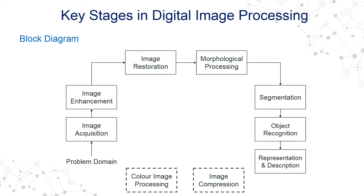For image compression, to reduce the requirement of large amounts of memory needed to store an image on a disk, or the bandwidth to transmit it, we try to compress the image such that information is not lost, but we are able to communicate and access the data at a faster rate and store it with a lower memory requirement.